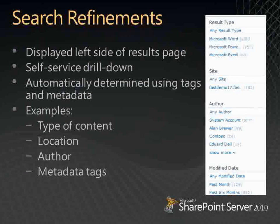The refinement panel on the left-hand side of the page is essentially a self-service drill-down. A common use case: a user searches for 'dog' but is looking for a specific type, like a German Shepherd. They can start with 'dog', view all results, then use a metadata tag on the left to filter down to German Shepherds — and drill down further from there. It gives users more flexibility to get to the content they're looking for, even if they're not sure where to start, helping to improve search experience and deliver more relevant results.